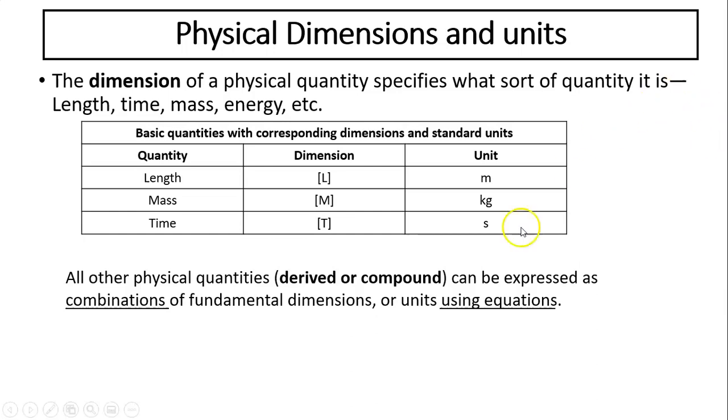These are the basic quantities and the symbols we use for dimensions: L for length, M for mass, T for time. We use brackets to indicate these represent dimensions. Sometimes you may just see capital L, capital M, capital T. These are basic units with corresponding basic dimensions and standard units. Other quantities, called derivative or compound quantities, can be expressed as combinations of fundamental dimensions or units using equations.